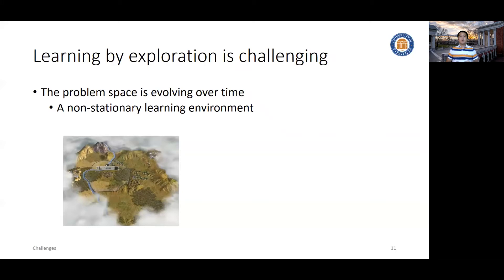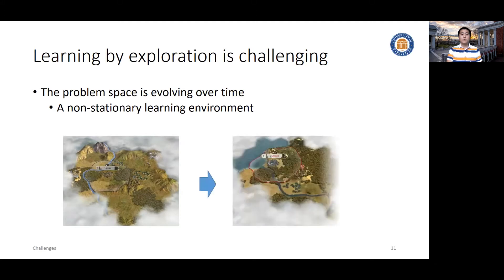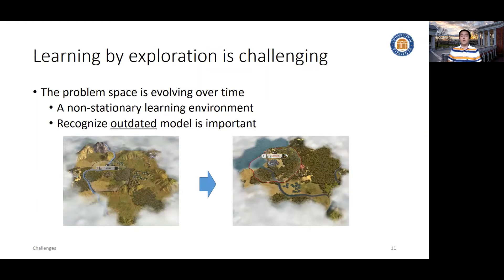Another important fact about the learning environment is it could be non-stationary. In classical machine learning, we usually assume a stationary learning environment where data instances are IID samples. However, in practice, in the real world, the only thing constant is change. The system needs to recognize the change of the environment, recognize what has been out of date, and keep exploring new things. Unfortunately, the system doesn't know when or where the change will happen — even parts we are quite confident of may become out of date. We have to keep refreshing ourselves to handle new challenges.